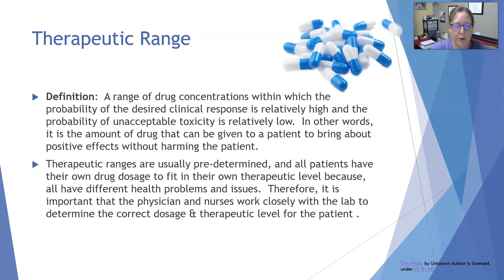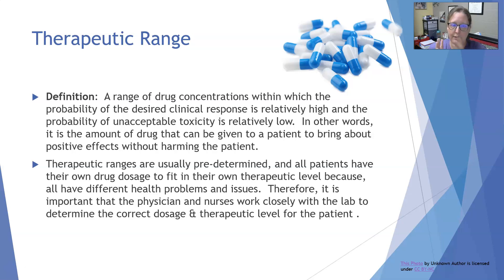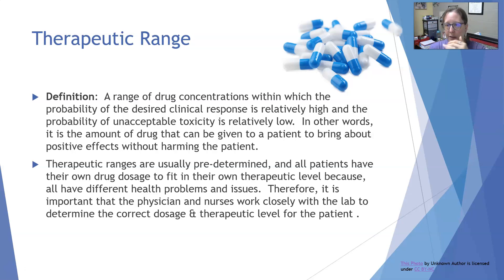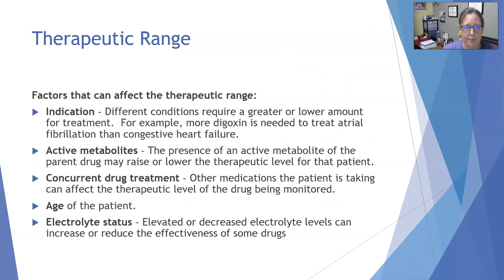Therapeutic ranges are usually predetermined by the manufacturers of the analyzer and the reagents for the specific assay. All patients have their own dosage to fit their own therapeutic levels because they can have different health problems. Physicians and nurses must work closely with the lab to determine the correct dosage for the correct therapeutic level for that patient — definitely above efficacy and below toxicity, but what's optimal within those numbers for that specific patient.